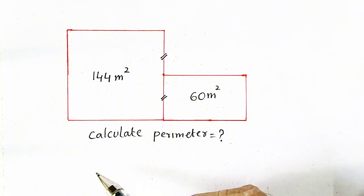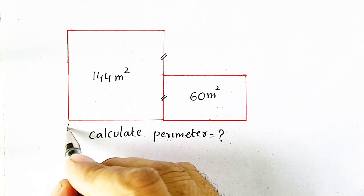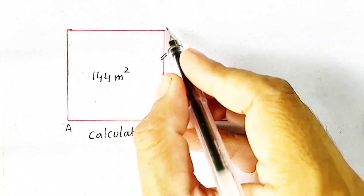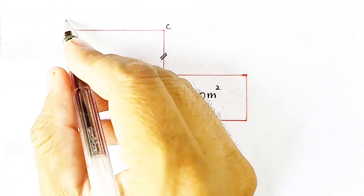This side, first of all, we name it. Consider it is A, B, C, and D.